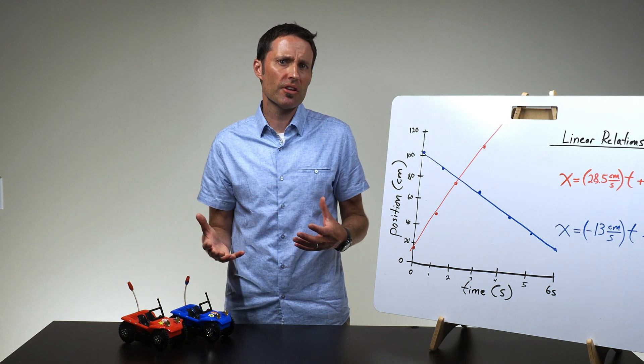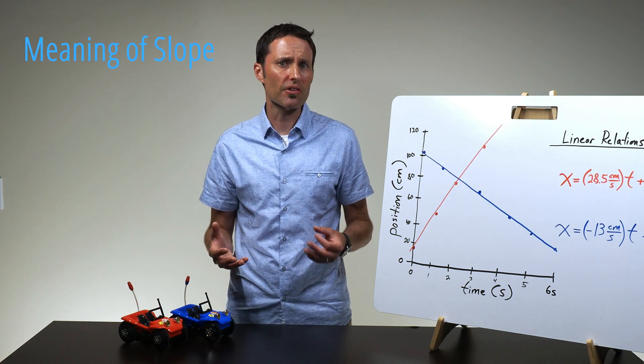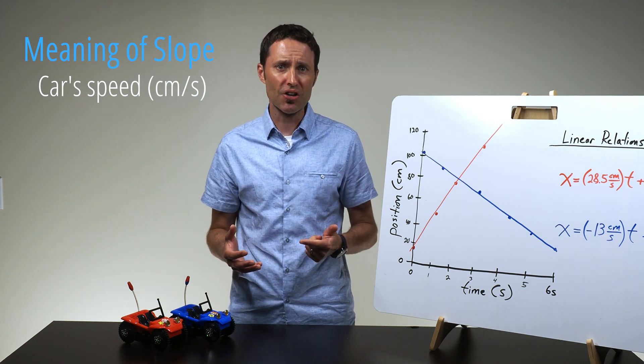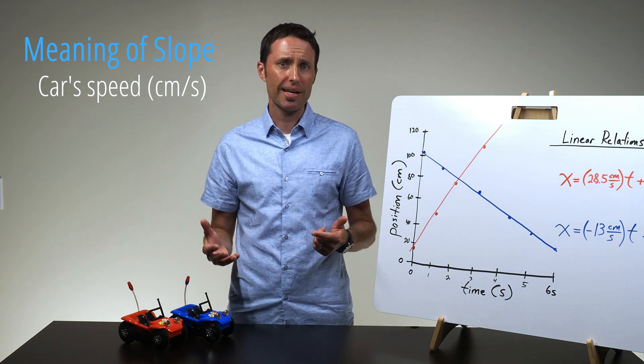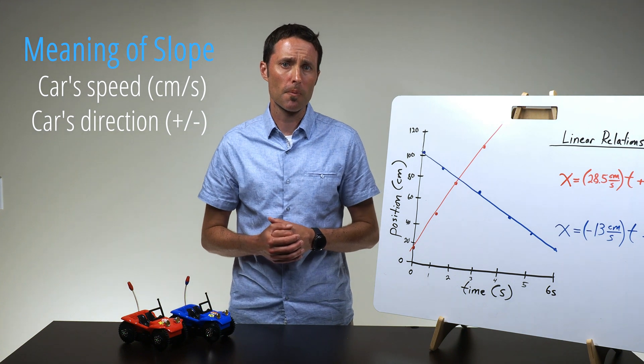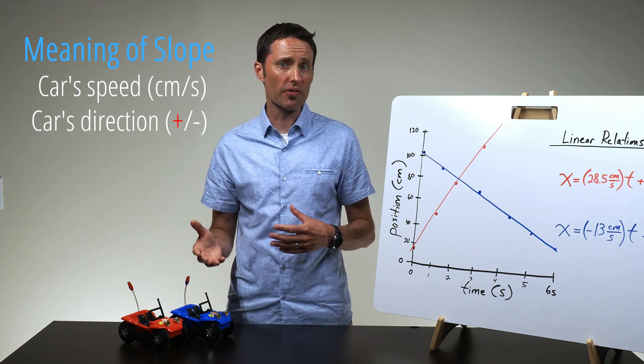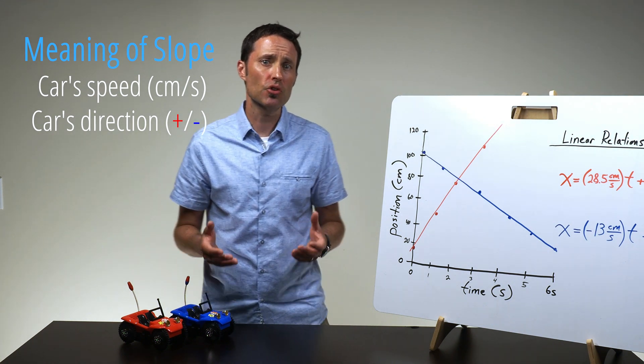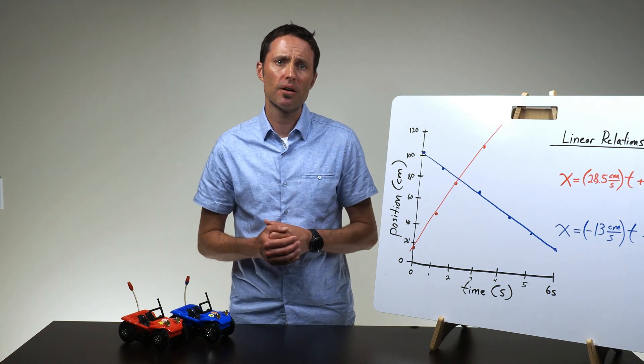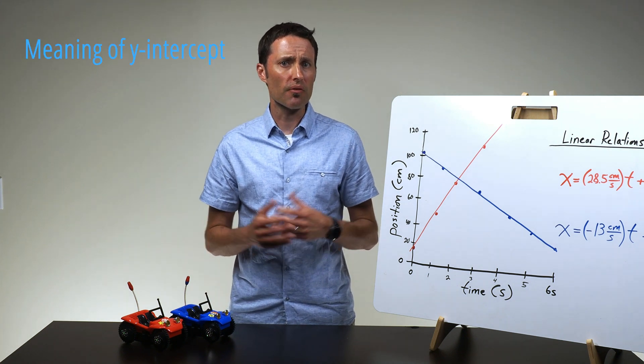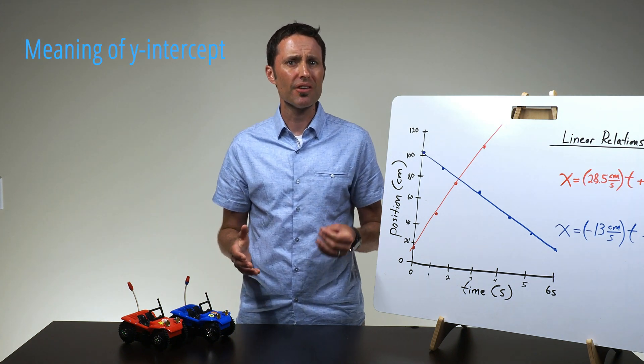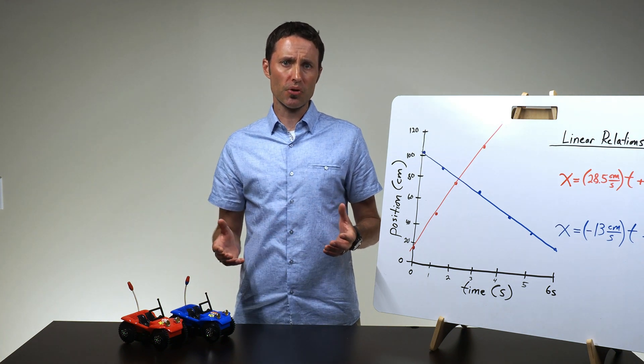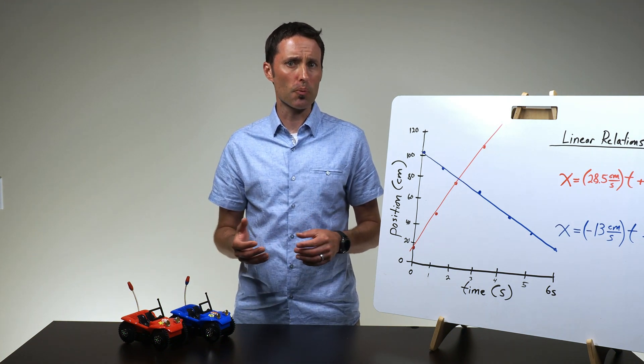The discussion surrounding these questions should lead students to the conclusion that the slope represents both the speed of the car—how many centimeters the car travels each and every second—and the direction the car is moving. A positive slope indicates the car is moving away from the zero position, and a negative slope indicates the car is moving towards the zero position. The students should also conclude that the y-intercept of the position versus time graph is the starting or initial position of the car.